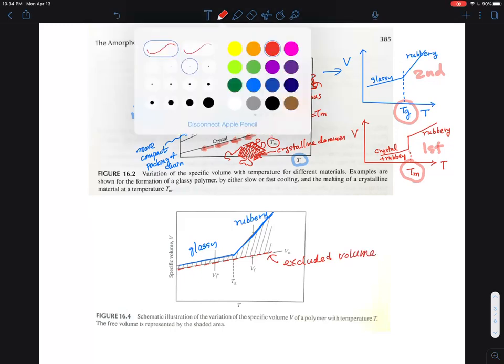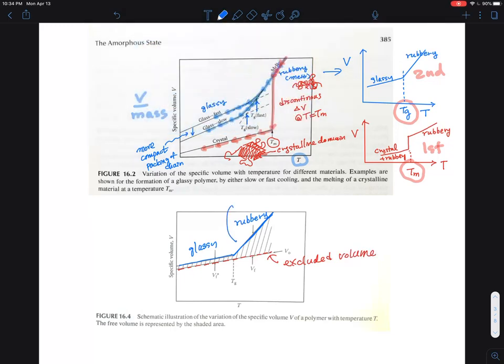The one above is the real macroscopic volume. The difference between these two is what we call the shaded area, and this is what we call the free volume.